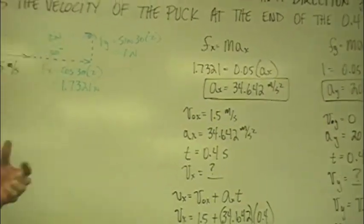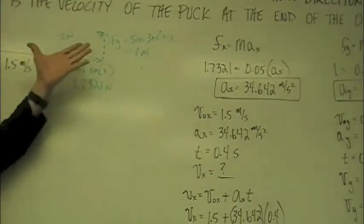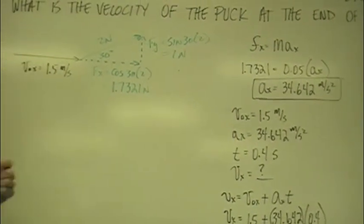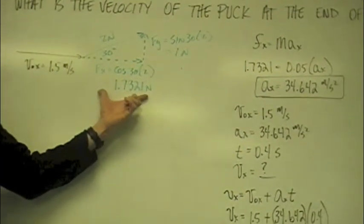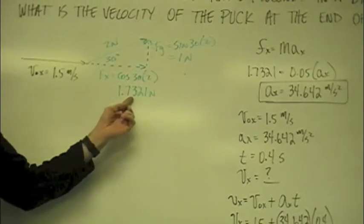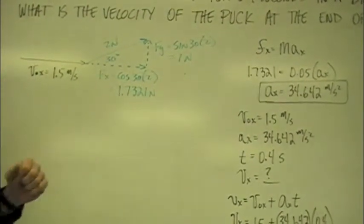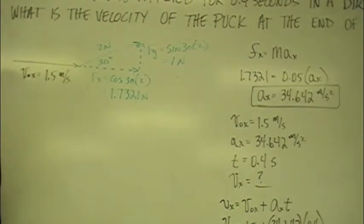So, we've broken our forces down here in a different color so you can tell that one's a velocity and one's a force vector. My x force is going to be 1.7321 and then my y force is going to be one newtons.